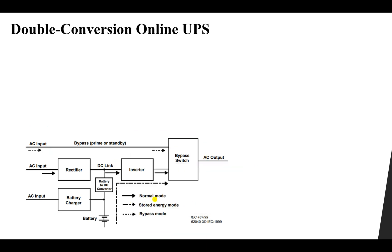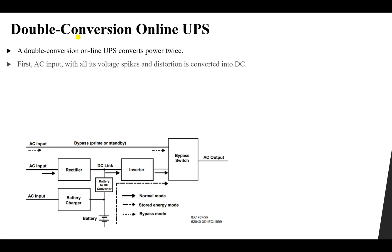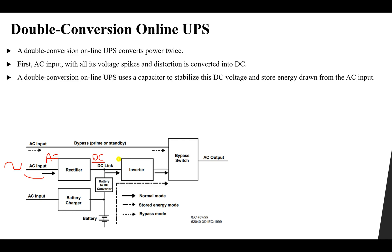The second mode is the normal mode, in which we have a double conversion process. A double conversion online UPS converts the power twice. First, the AC input — with all its voltage spikes and distortions — is converted from AC into DC using a rectifier. Then we have a DC link capacitor which stabilizes this DC voltage.